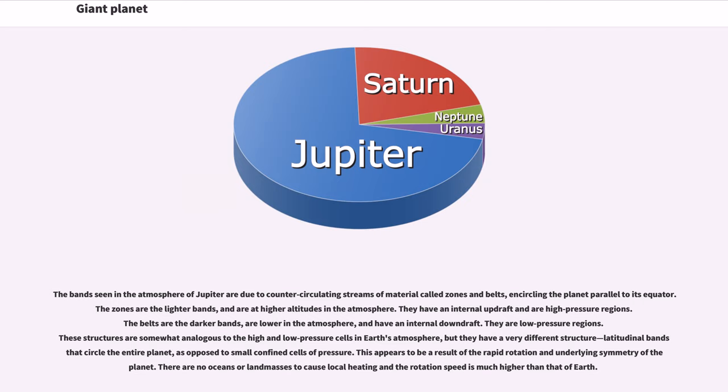These structures are somewhat analogous to the high and low-pressure cells in Earth's atmosphere, but they have a very different structure: latitudinal bands that circle the entire planet, as opposed to small confined cells of pressure. This appears to be a result of the rapid rotation and underlying symmetry of the planet. There are no oceans or land masses to cause local heating and the rotation speed is much higher than that of Earth.